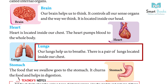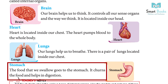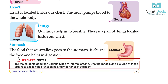Lungs. Our lungs help us to breathe. There is a pair of lungs located inside our chest. Stomach. The food that we swallow goes to the stomach. It churns the food and helps in digestion.